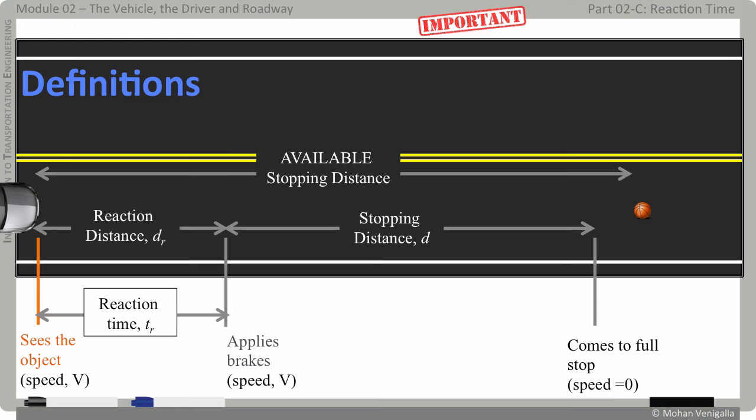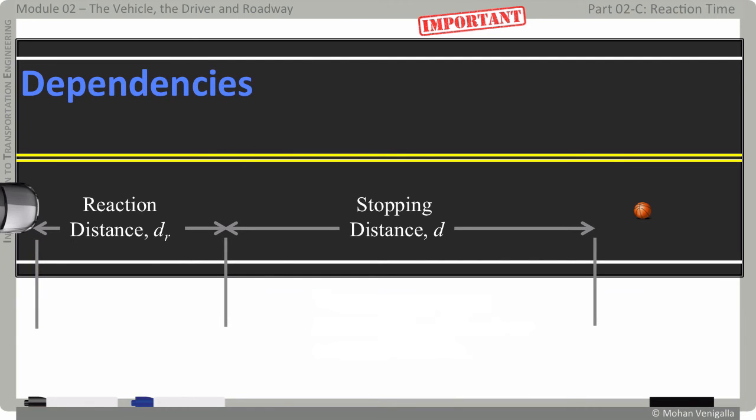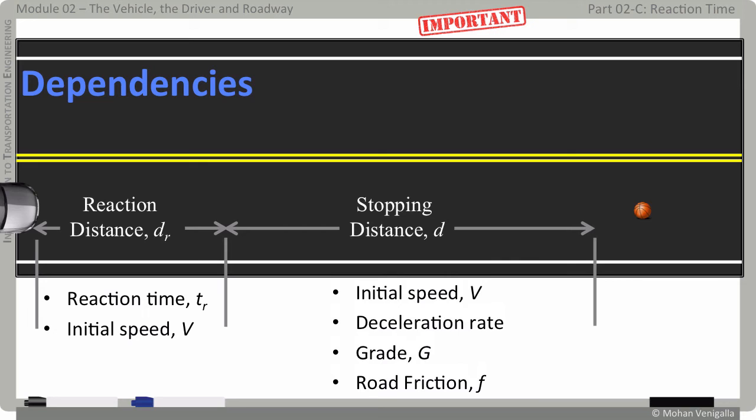Here's a very important note. These definitions are very strict definitions and there is no room for error. As you would expect, reaction distance is dependent on reaction time and initial speed of the vehicle. That's fairly simple and the stopping distance would be dependent on a host of variables but primarily on initial speed, deceleration rate which is again dependent on driver and the vehicle, roadway grade and road friction.